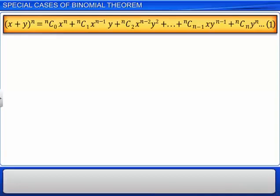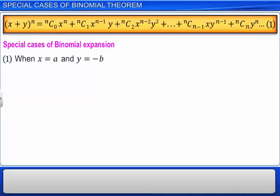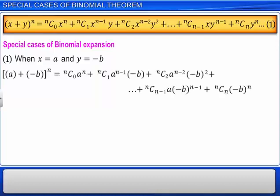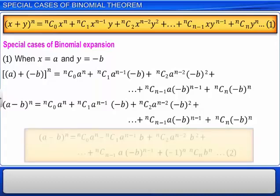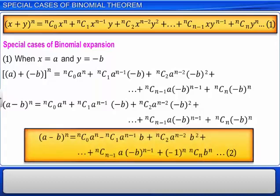In this module, let us look at some special cases of binomial expansion. Let's begin with the first case when x is equal to a and y is equal to minus b. Substituting the values of x and y in equation 1 and then simplifying, we get the expansion as shown. Denote this by equation 2.